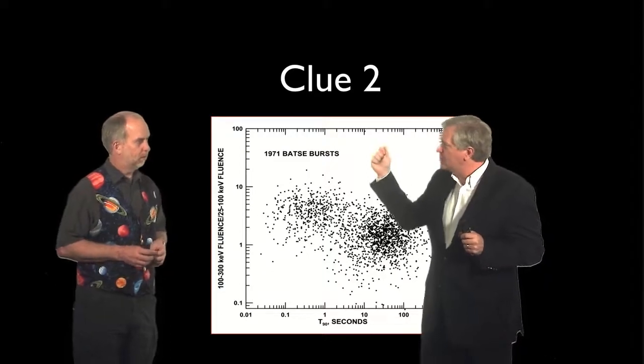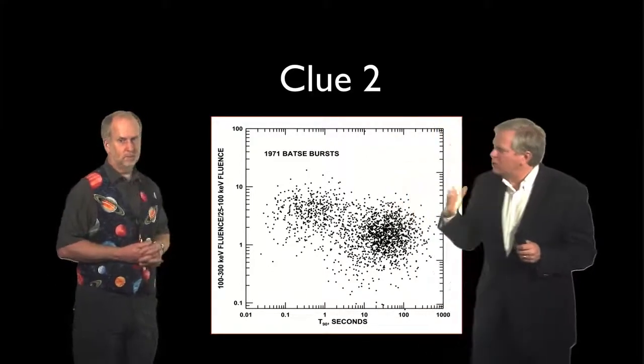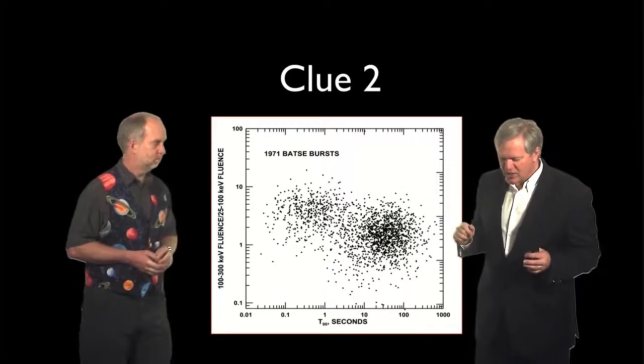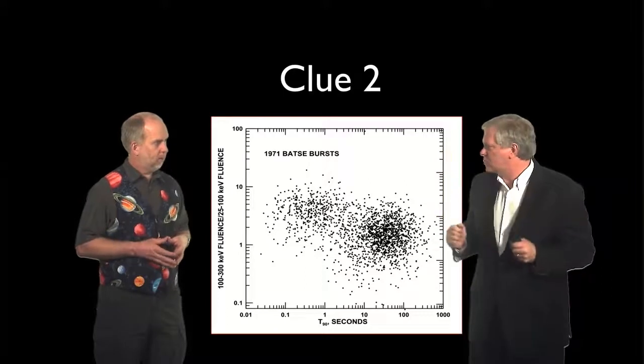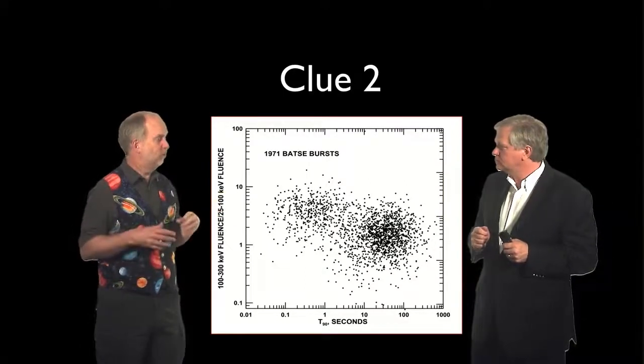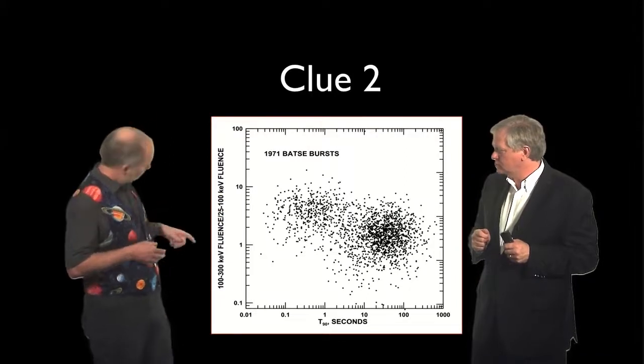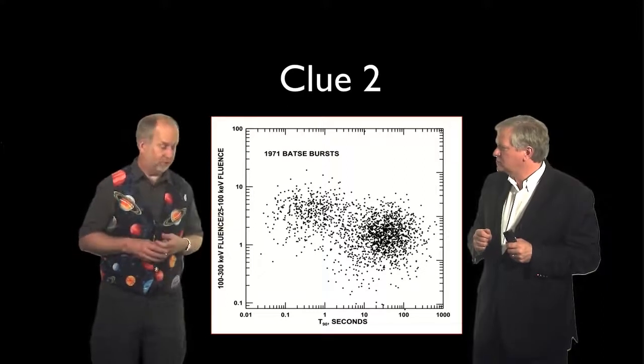So it sort of tells you the temperature or the type of emission process, the energy level of the emission process. So the gamma rays are just like light. They come in many different flavors. We lump them all together and call them gamma rays, but a gamma ray with an energy of 300 kilo electron volts as opposed to 25 is a very different kettle of fish.